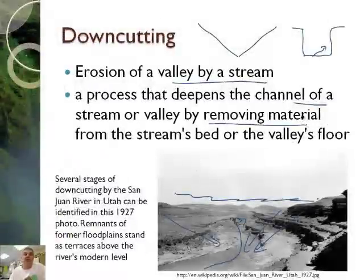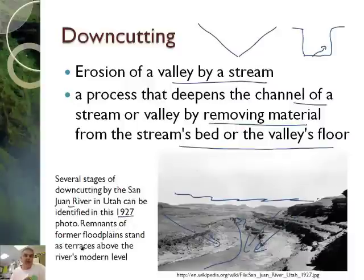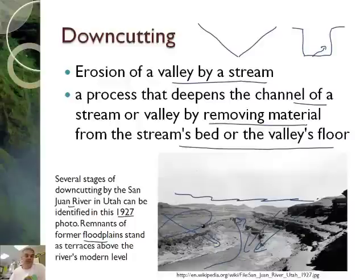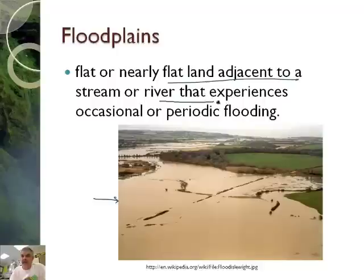Downcutting is a process that deepens the channel of a stream or valley by removing material — the silt, sand, and rocks — and moves them down to the ocean. These are several stages of downcutting shown for the San Juan River in Utah; this is the 1927 photo. Remnants of former floodplains stand as terraces — those used to be the floodplains, but now the floodplains are lower. A floodplain is the nearly flat land adjacent to a stream or river that experiences occasional or periodic flooding.